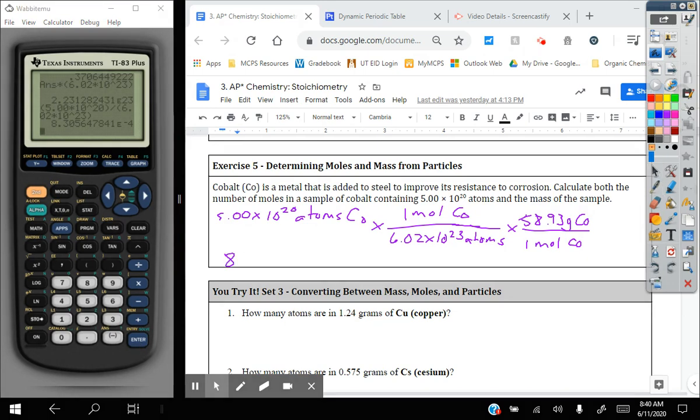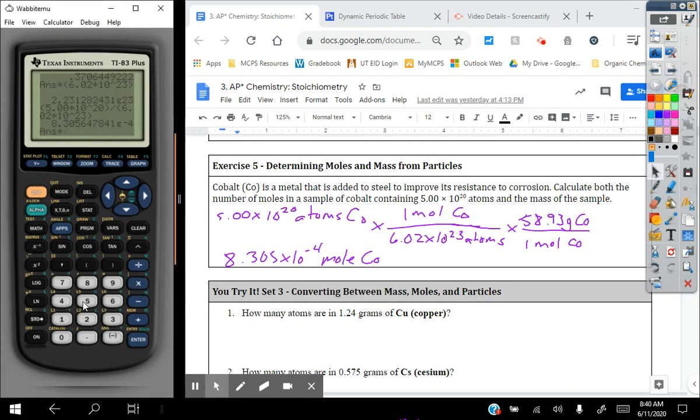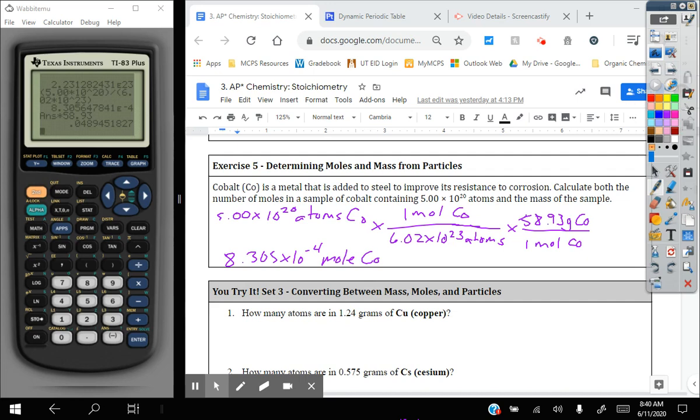And so when I divide by that, I get a very small amount of moles, 8.305 times 10 to the negative fourth moles of cobalt. But then I multiply this by 58.93, multiplying by the top of my molar mass. And with three significant figures, my final answer ends up being 0.0489 grams of cobalt as my final answer. I can go back and check my units. Atoms of CO have canceled. Moles of CO have canceled. And therefore, I am in grams.